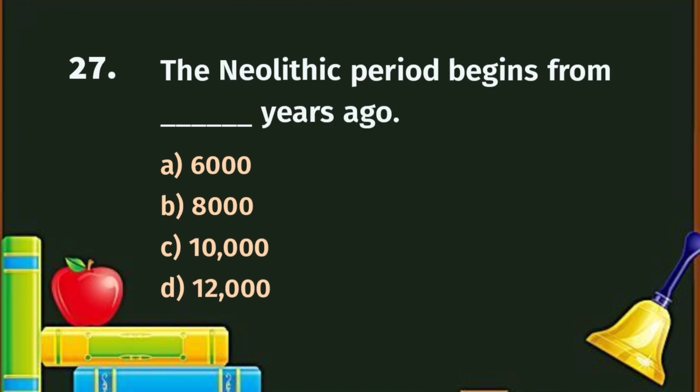Question number 27. The Neolithic period begins from how many years ago? A. Six thousand years ago, B. Eight thousand years ago, C. Ten thousand years ago, D. Twelve thousand years ago. The correct answer is C - Ten thousand years ago.